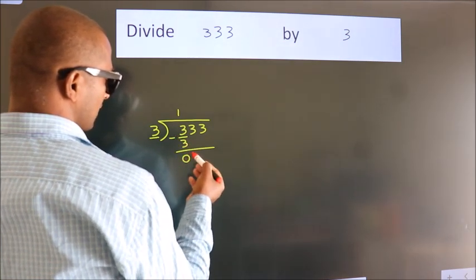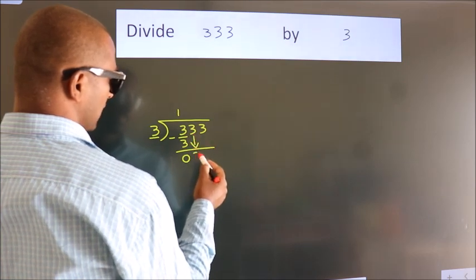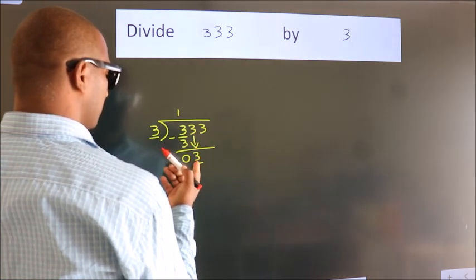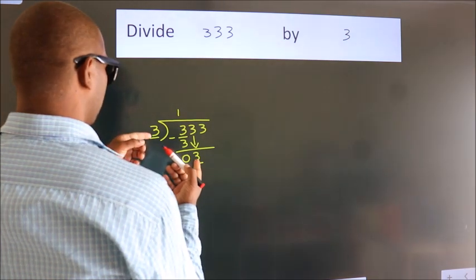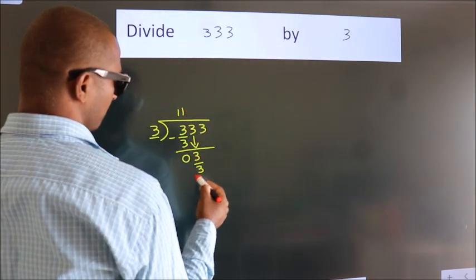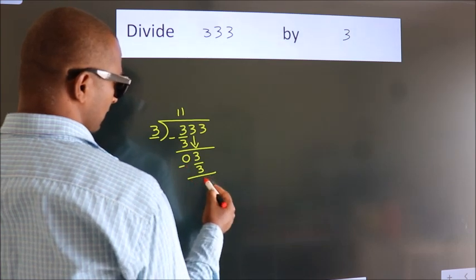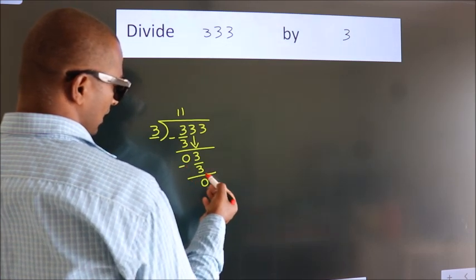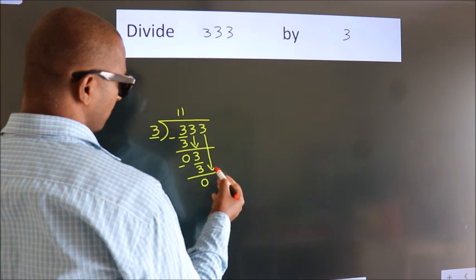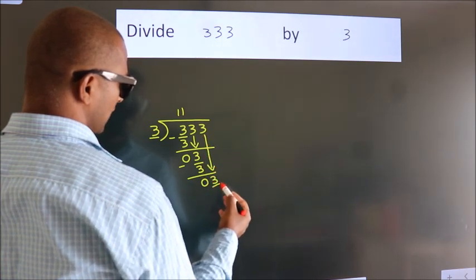After this, bring down the beside number. So 3 comes down, so 3. When do we get 3? In the 3 table: 3 once is 3. Now we subtract. We get 0. After this, bring down the beside number. So 3 comes down, so 3.